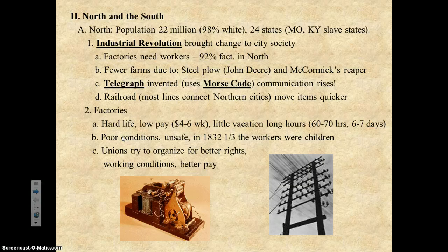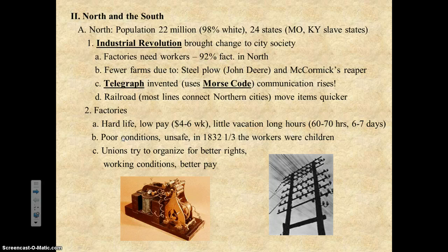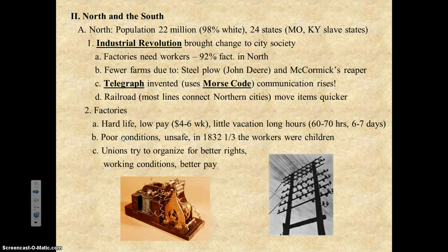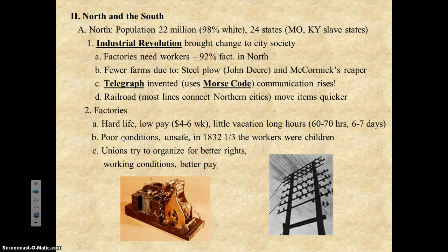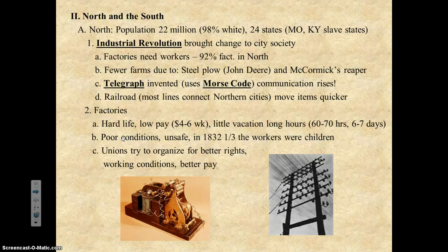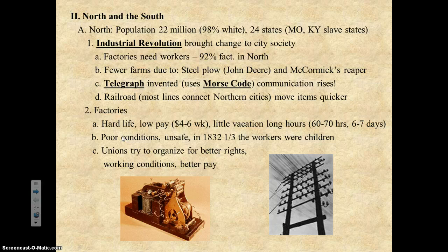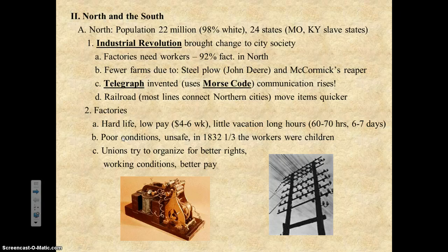Fewer farms are located in the North, even though they do have farms that produce food. The North does not have plantations — they focus on factories. One of the big inventions at the time was the steel plow by a man named John Deere. The steel plow, pulled behind a horse or ox, dug up the ground for you. Having better technology made the need for slaves in the North unnecessary.